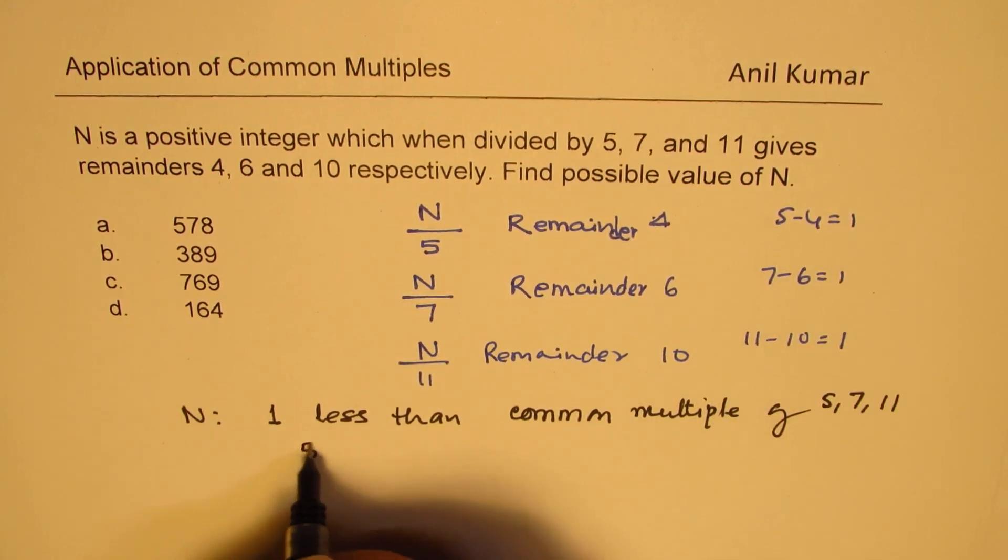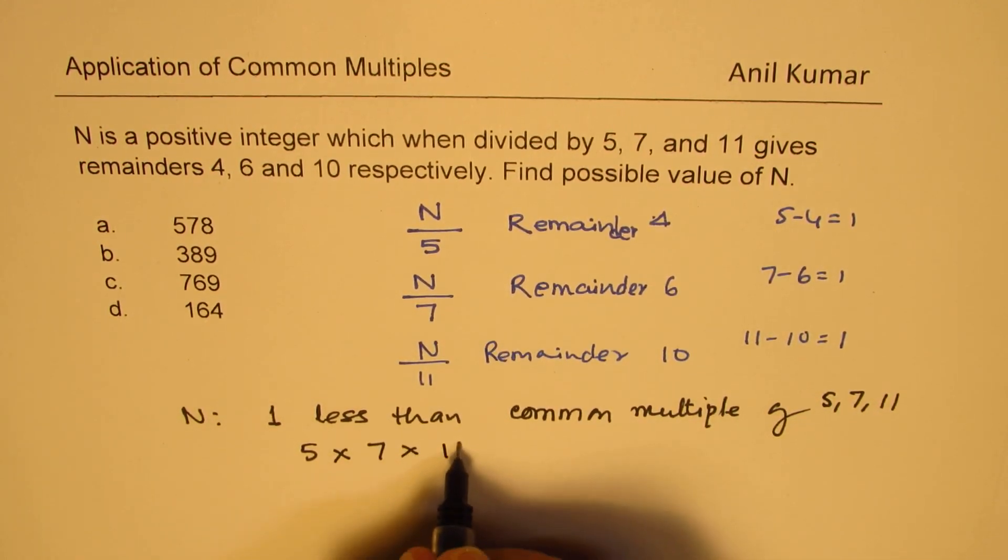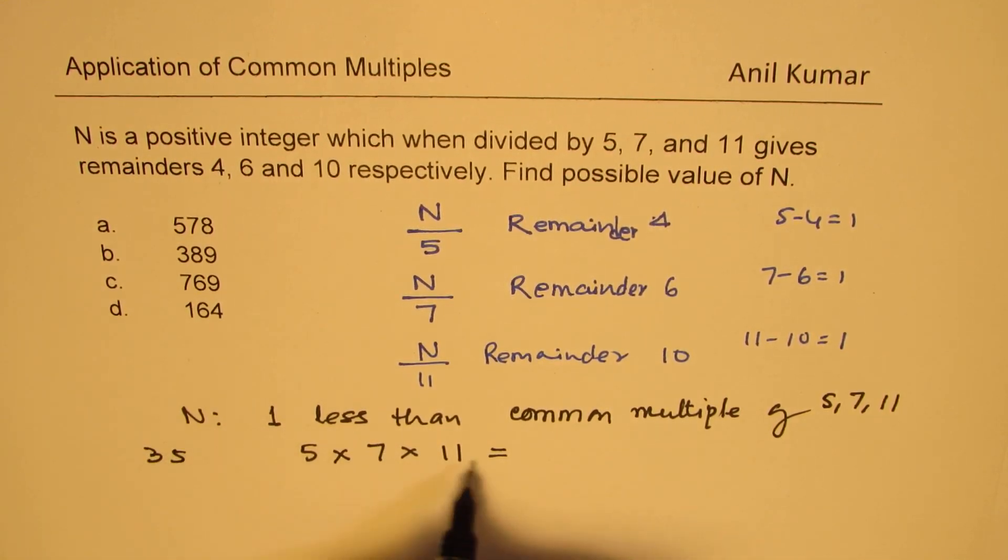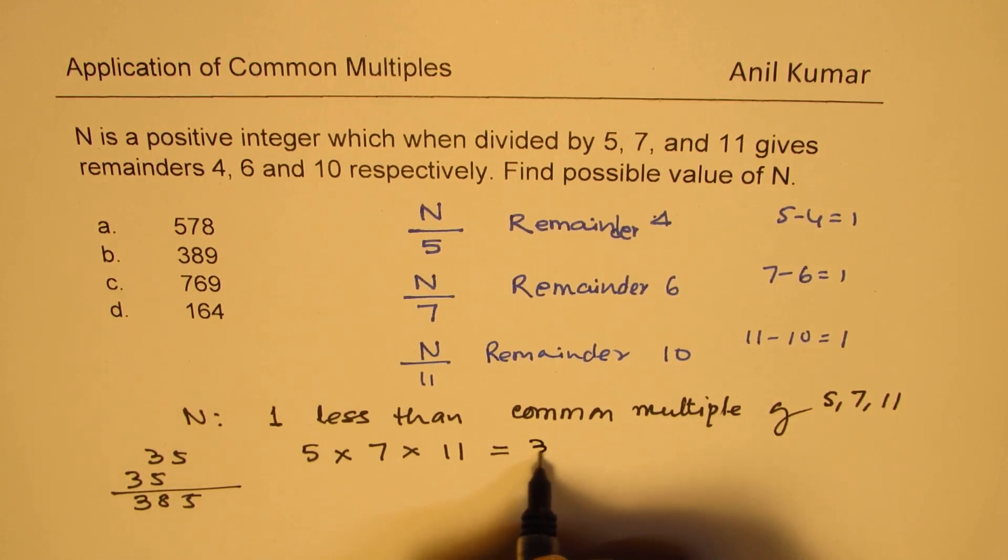So the number should be 5 times, these are all prime numbers, 5, 7, and 11. So when you multiply them, what do you get? 5 times 7 is 35. So 35 times 11, just add 35, 35. So you get 385. So it is 385.